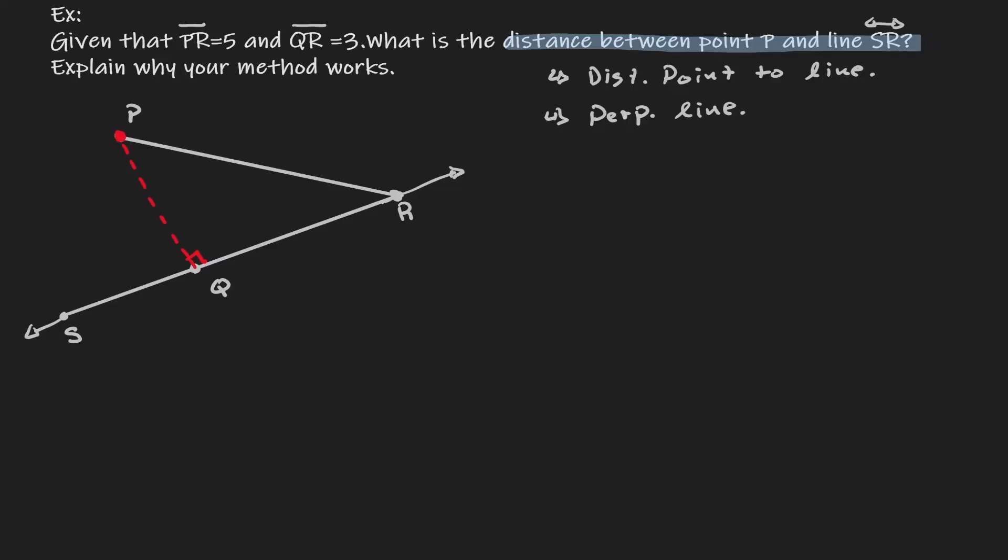Now, let's put down the givens on the diagram. I think we should have done that first. PR is 5 and QR is 3. But now, if we want to know what is the distance, then pretty much the question now is, what is PQ?